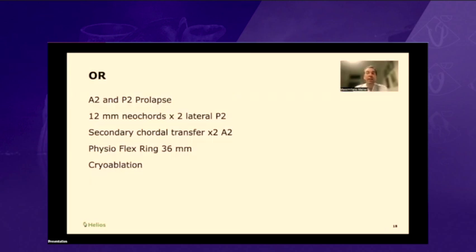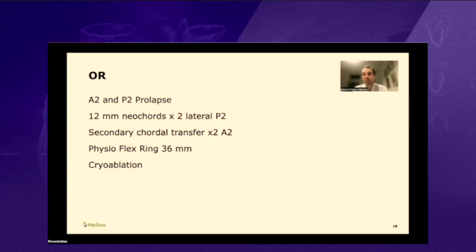The surgery went well. Our surgeon in this case was Michael Borger. He found the A2-P2 prolapse with restriction of P3. He decided to put neochords on the lateral portion of P2, then did secondary cordal transfer to pull down the A2 segment. He put in a physioflex ring of 36 millimeters — the anterior mitral valve leaflet measured approximately 34 millimeters. We also did cryoablation for atrial fibrillation.